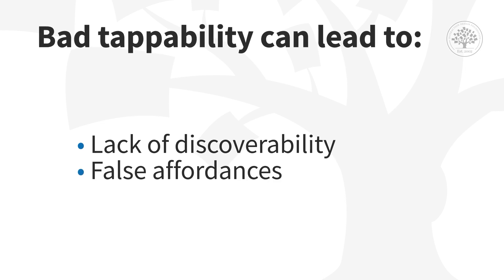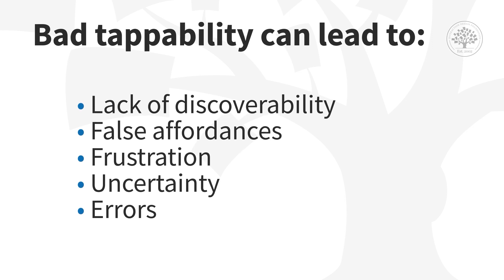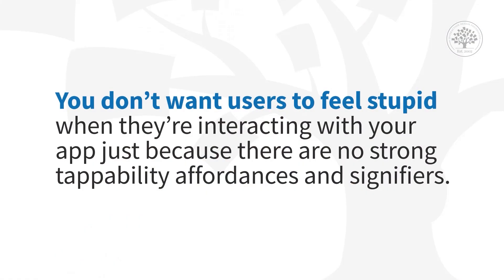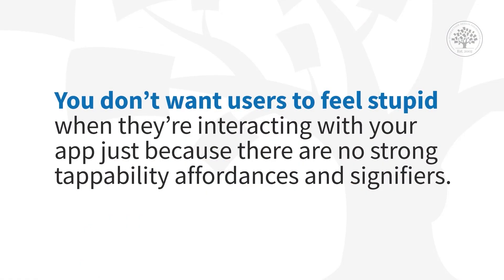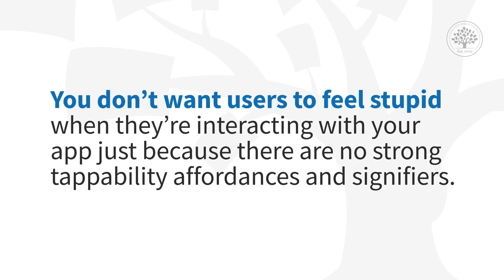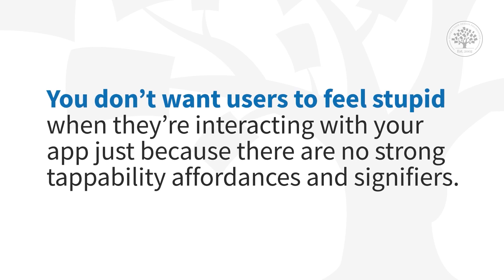If you don't offer strong signifiers, it can lead to a lack of discoverability, false affordances, and user frustration, uncertainty, and errors — that's what the research shows. I would add to that: how about feeling stupid? You don't want users to feel stupid when they're interacting with your app just because there are not strong tappability affordances and signifiers.